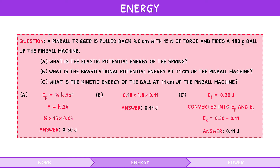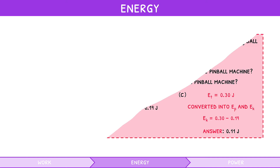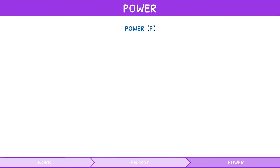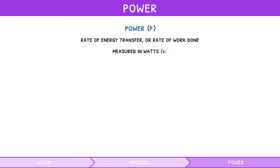Lastly, in addition to knowing about work and energy, the IB expects you to understand the concept of power. Power is defined as the rate of energy transfer, or the rate of work done, measured in watts. The formula for power is energy divided by time, or work done divided by time.